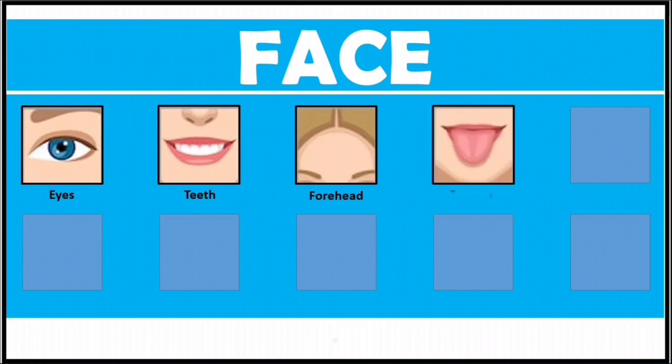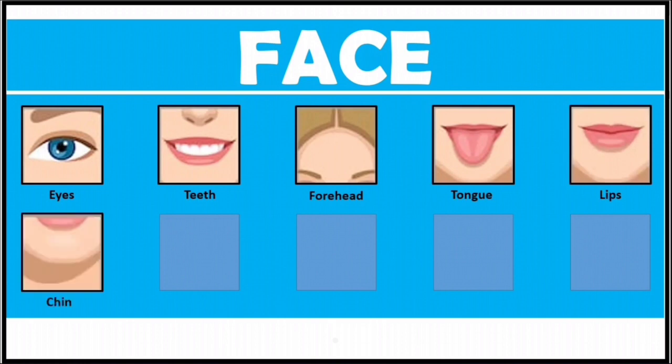Next one, tongue. We taste the food items with the help of our tongue. Then lips. Next one, chin. Then comes nose. We breathe with the help of our nose.